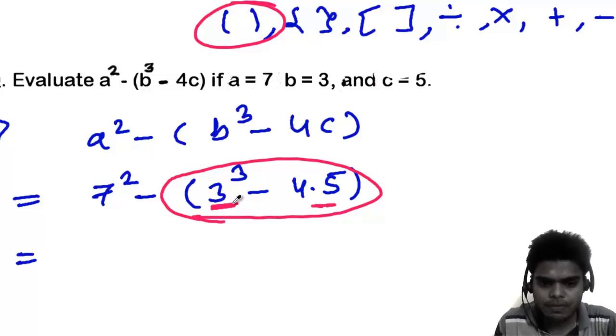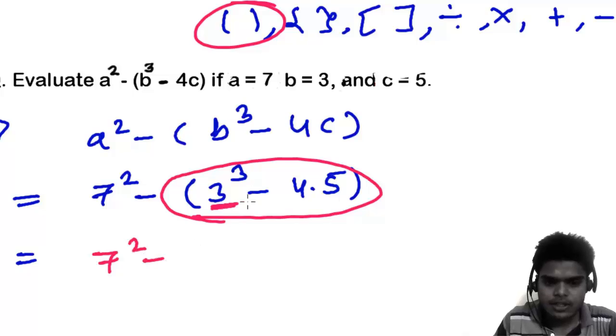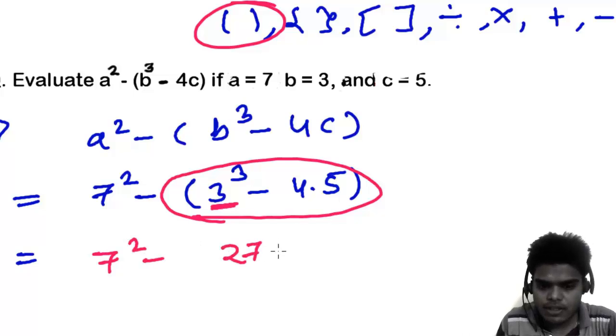So let's do one by one. So it's going to be seven square, three cube is 27, minus 4 times 5 is 20.